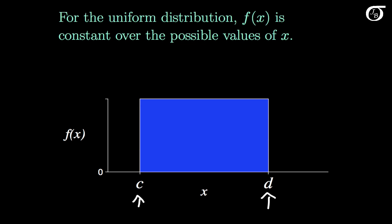Any intervals of equal length are equally likely to occur. So it is exactly as likely to get a value in an interval down here close to c as a value over here close to d, provided those two intervals are of equal length.